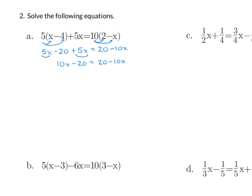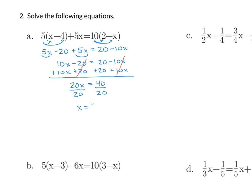I want to move all my variables to one side and all my constants to the other, so I'm going to add 10x to both sides and also add 20 to both sides. We move our variables to the left and our constants to the right. So we get 20x on the left — my 20's cancel — equals 40, and my 10x's cancel. We divide both sides by 20 and get x equals 2.